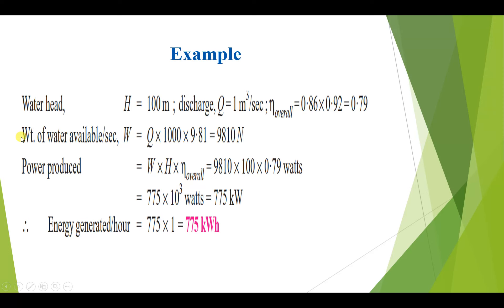In a similar way, we calculate the weight of water available per second, denoted W, equal to 1000 × 9.81 multiplied by the discharge rate. Taking a discharge rate of 1 cubic meter per second, we get 9810 Newtons — that is the weight of water available per second. The power produced is W × head × overall efficiency, giving us the result in Watts.